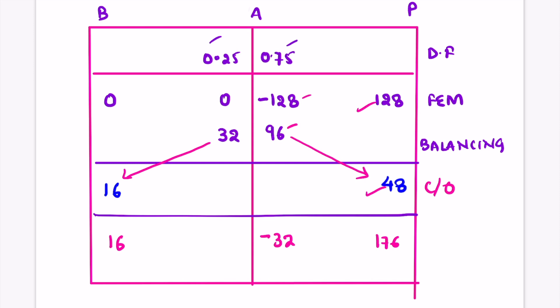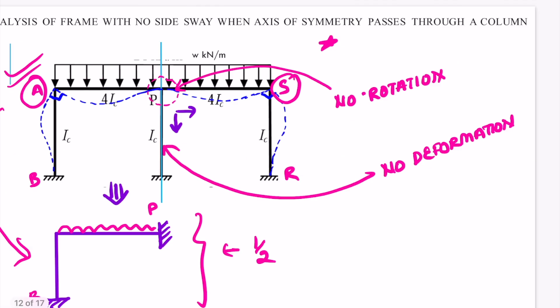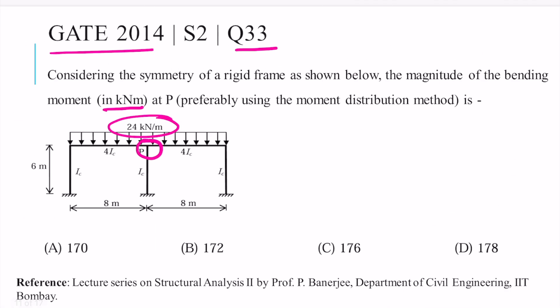We needed to calculate the value of M_PA, that is the moment at joint P, and we have got our value as 176 kilonewton-meter. Looking at the options, this matches option C. So option C is the correct answer: the bending moment at P is 176 kN·m.